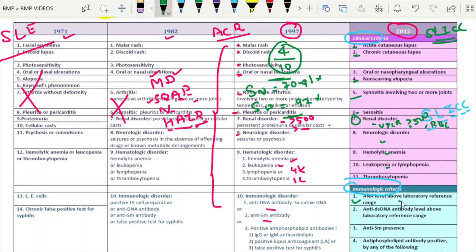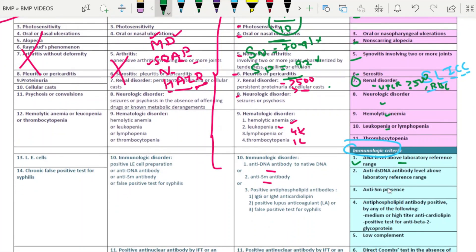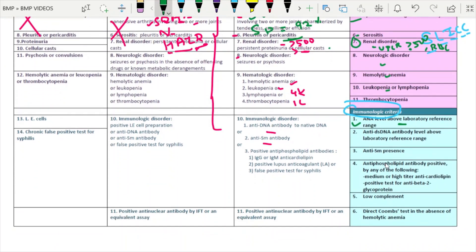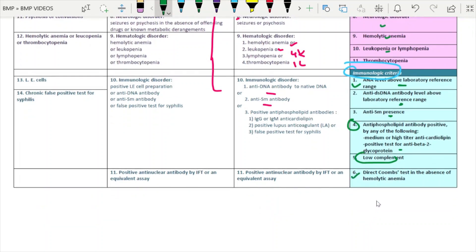Then ANA, here as you see in this criteria, they have used above the laboratory reference range, they didn't give any titer. Then anti-dsDNA positive, anti-Smith positive, APLA, either anti-beta-2 glycoprotein, cardiolipin, or lupus anticoagulant, low complement have been included, direct Coombs test for the diagnosis.